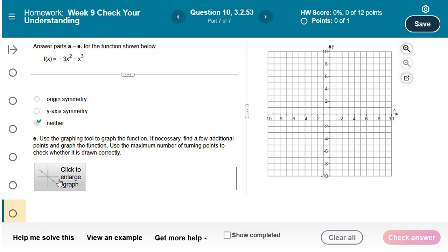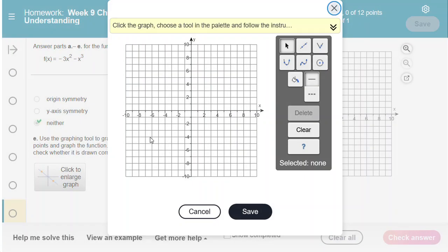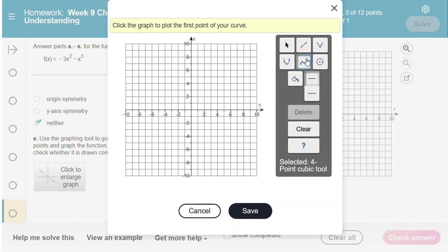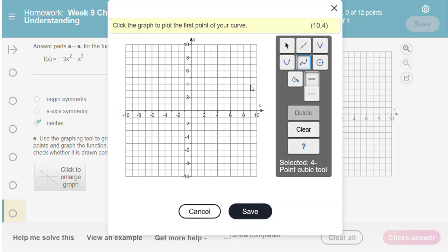Finally we're going to graph the function using the graphing tool. We're going to click to enlarge graph and the tool that we're going to use is this one. It's called the four point cubic tool. Now this tool works best when you plot points from left to right.